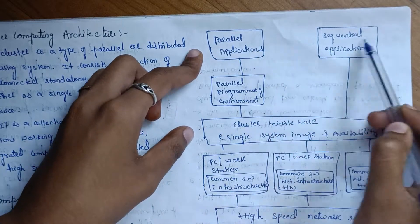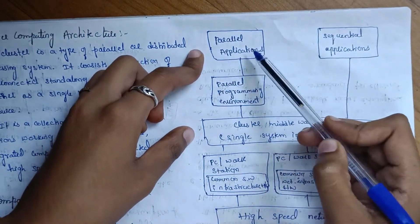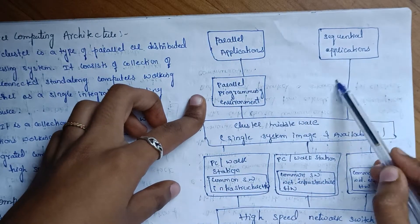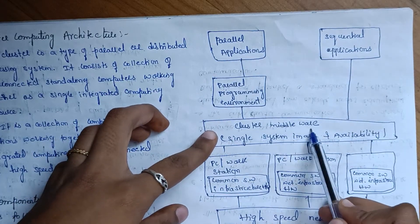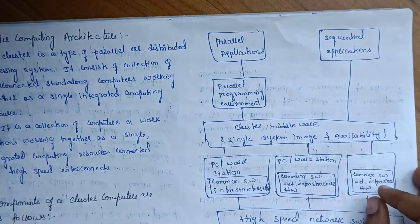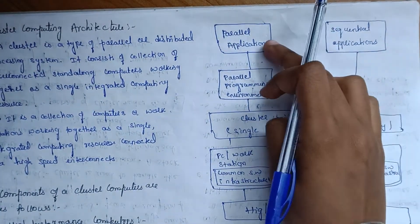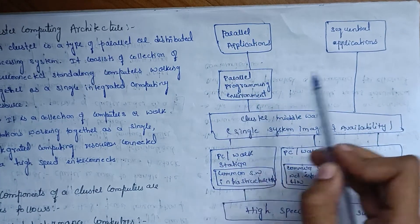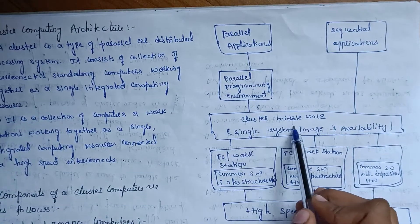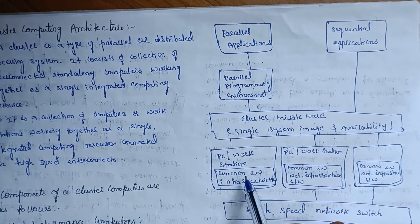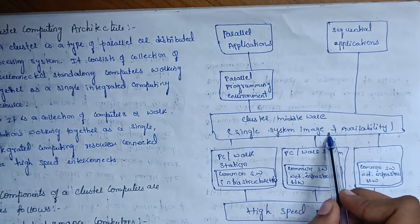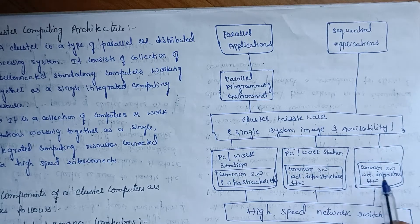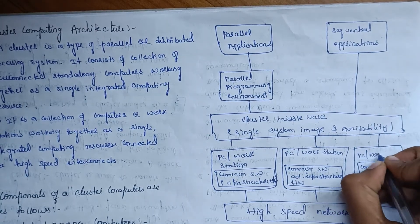The architecture includes parallel applications and sequential applications. We will look at the parallel programming environment. The next layer is cluster middleware, which provides single system image and availability. The first component of cluster middleware is the PC workstation.